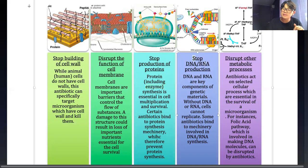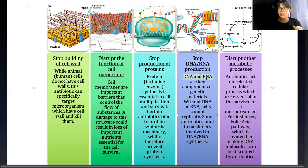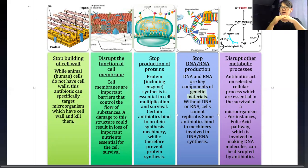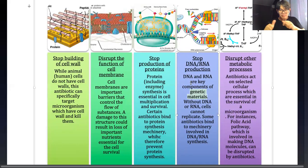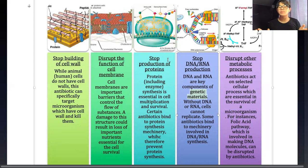Other antibiotics can stop DNA and RNA production. DNA and RNA are important components of genetic material - they are what gets passed on to new cells. If there is no DNA, new bacterial or fungal cells cannot be produced. So just like stopping protein production, stopping DNA production also prevents the microorganisms from multiplying.